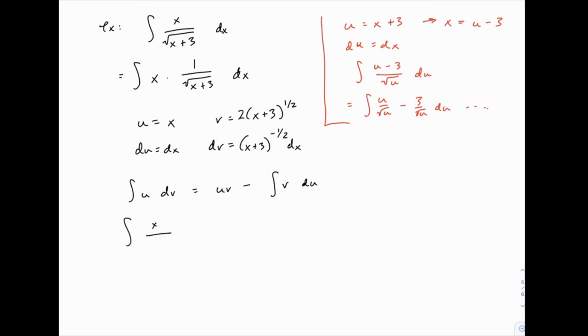So here we have our original integral equals u times v. So this looks a little bit complicated, but stick with it, minus the integral of v times du. Now the nice thing is du is just dx, so this is just the integral of v dx.